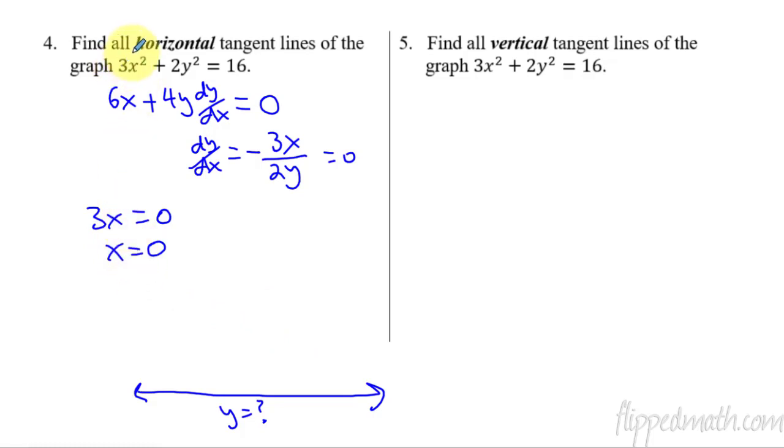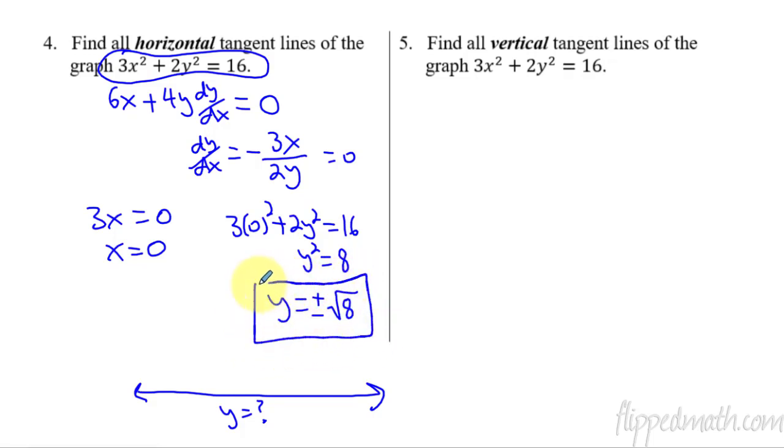So I take my original equation here, and you substitute in an x equals zero. So it becomes three times zero squared, plus 2y squared equals 16. Solve for y. Let's see, that's gone. Divide by 2. y squared equals 8. So y is equal to plus or minus, there's two of them, square root of 8. So I have two horizontal tangent lines. For whatever that graph is, these are the two lines. And they happen when x equals zero.